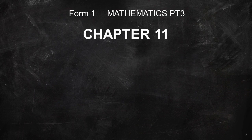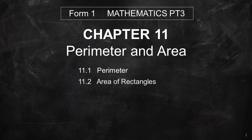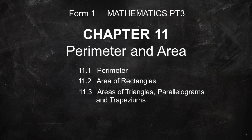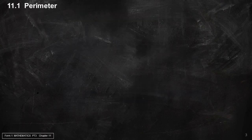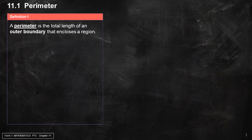Chapter 11: Perimeter and Area. 11.1 Perimeter, 11.2 Area of Rectangles, 11.3 Area of Triangles, Parallelograms, and Trapezium. 11.1 Perimeter — Definition 1: A perimeter is the total length of an outer boundary that encloses a region.